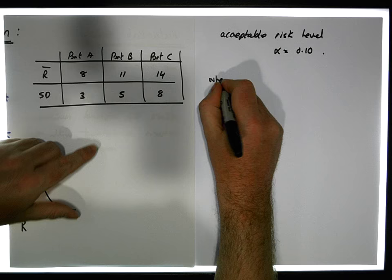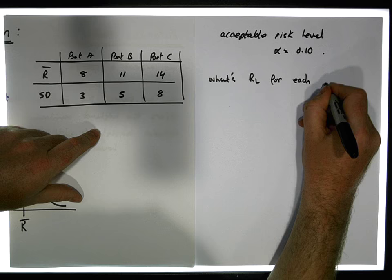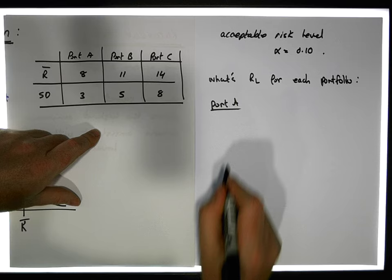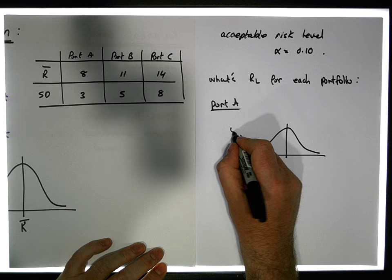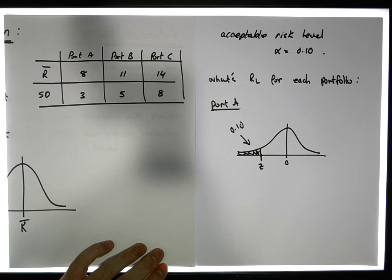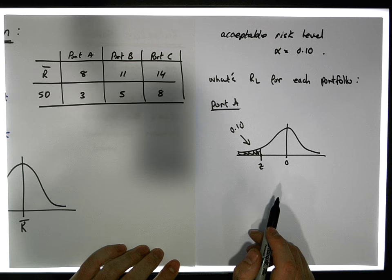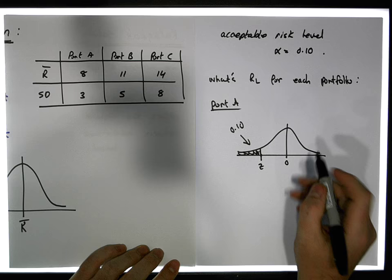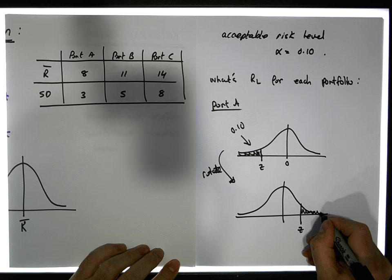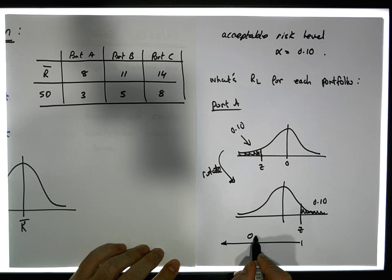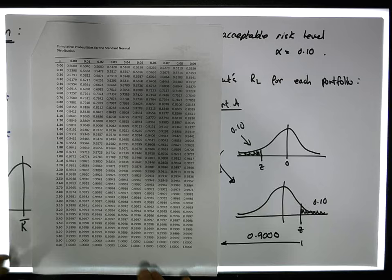So what we need to find is RL for each portfolio. For portfolio A, we're putting 0.10 of the area in the left-hand tail. From a standard normal perspective, what z-score has 10% of the area to its left? Since this is a negative z-score, by rotation, we need the positive z-score that has 0.10 in the right-hand tail — meaning 0.90 of the area to its left. Our tables are cumulative, so we look up 0.90.